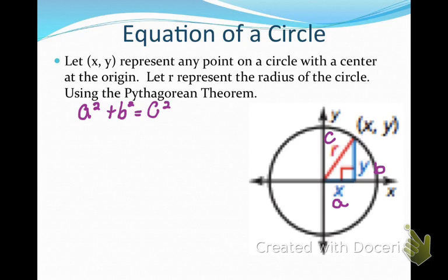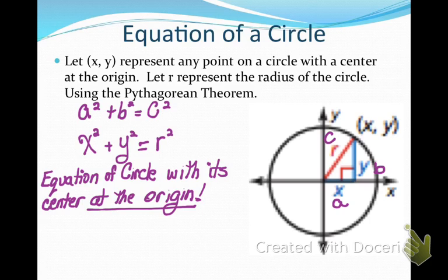If you remember the Pythagorean Theorem, it's a squared plus b squared equals c squared. So if I take our x length and square it, that would be our a squared. If I take our y length and square it, that would be our b squared. And if I take the length of our radius and square it, that would be our c squared. This is actually the equation of a circle with a center at the origin: x squared plus y squared equals r squared. Make sure you write that down in your notes.